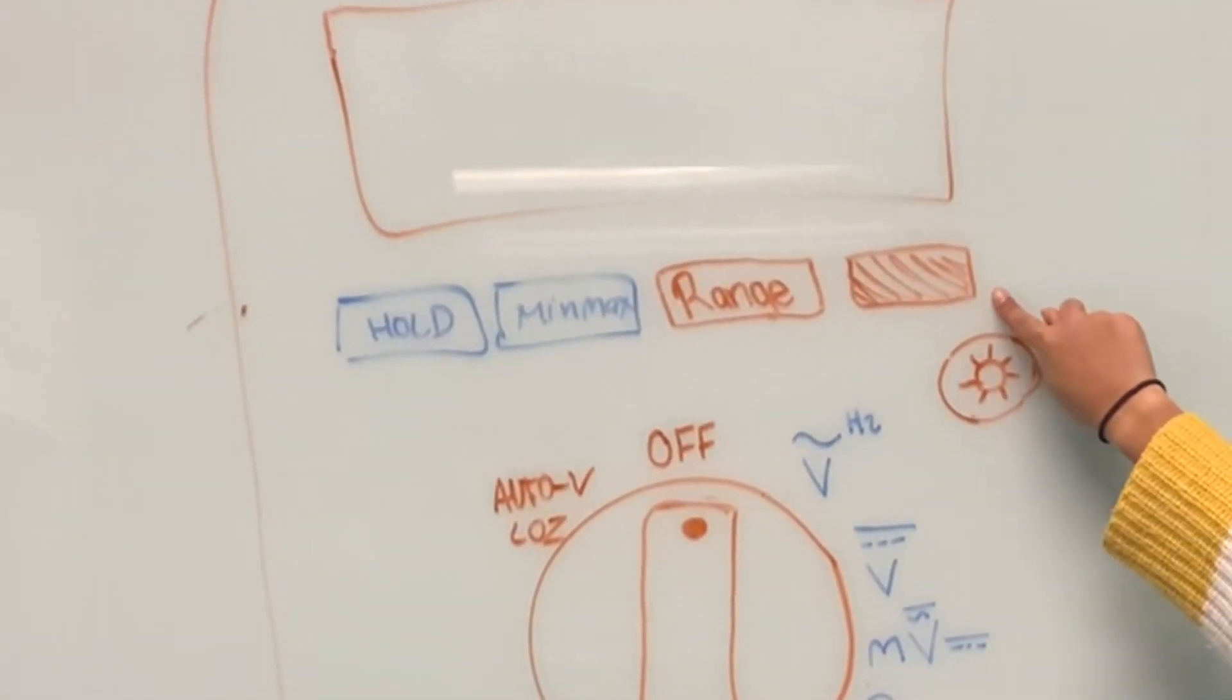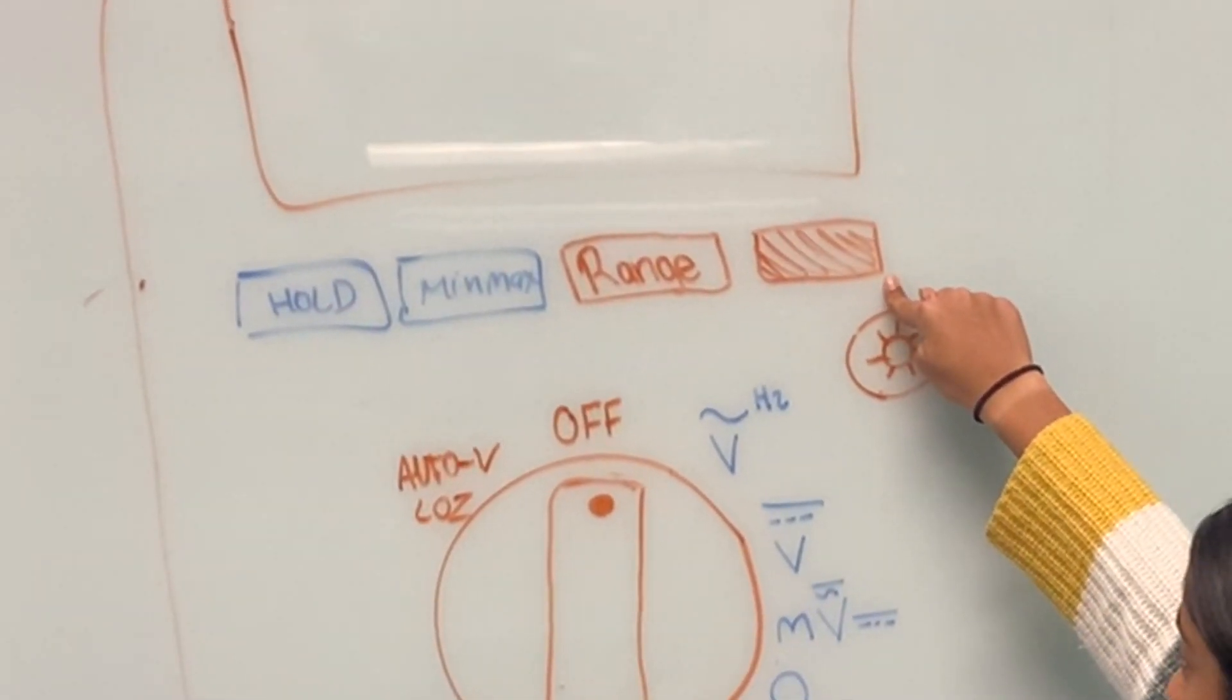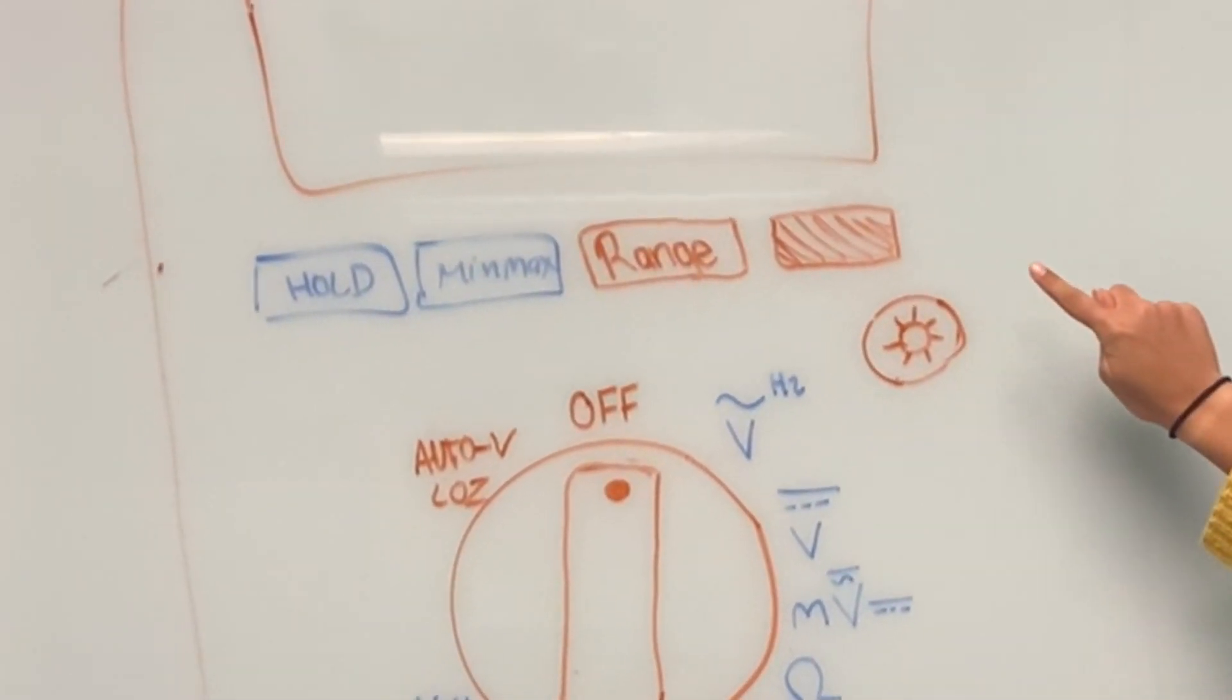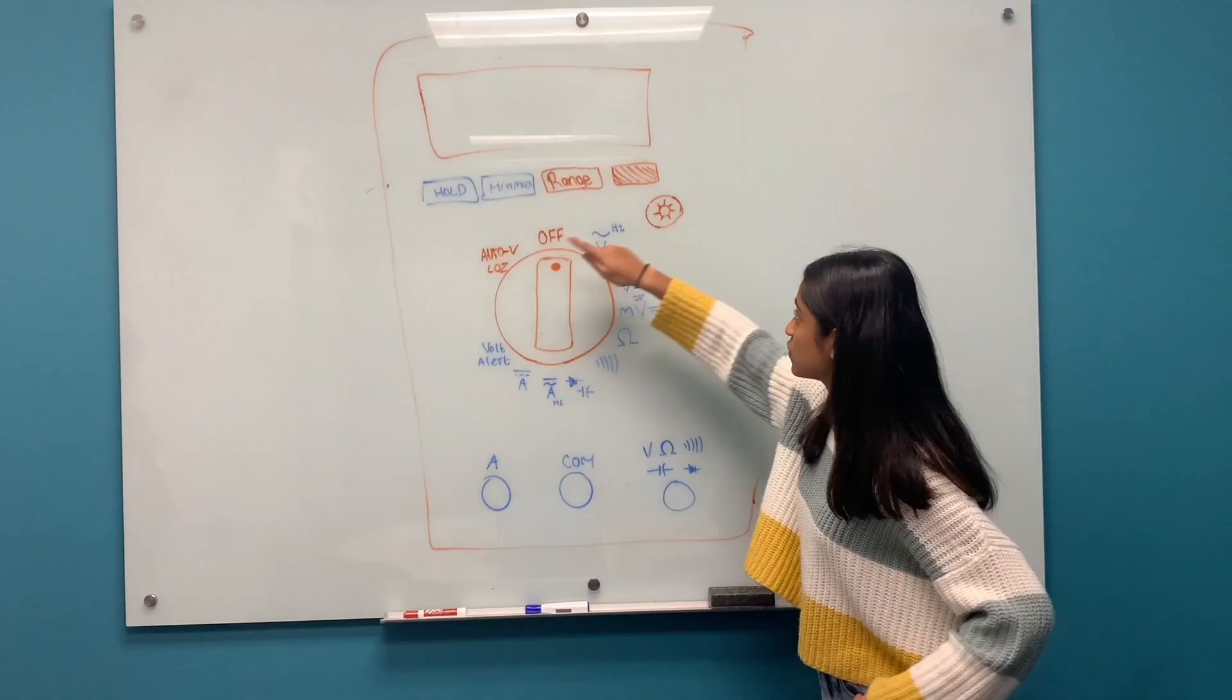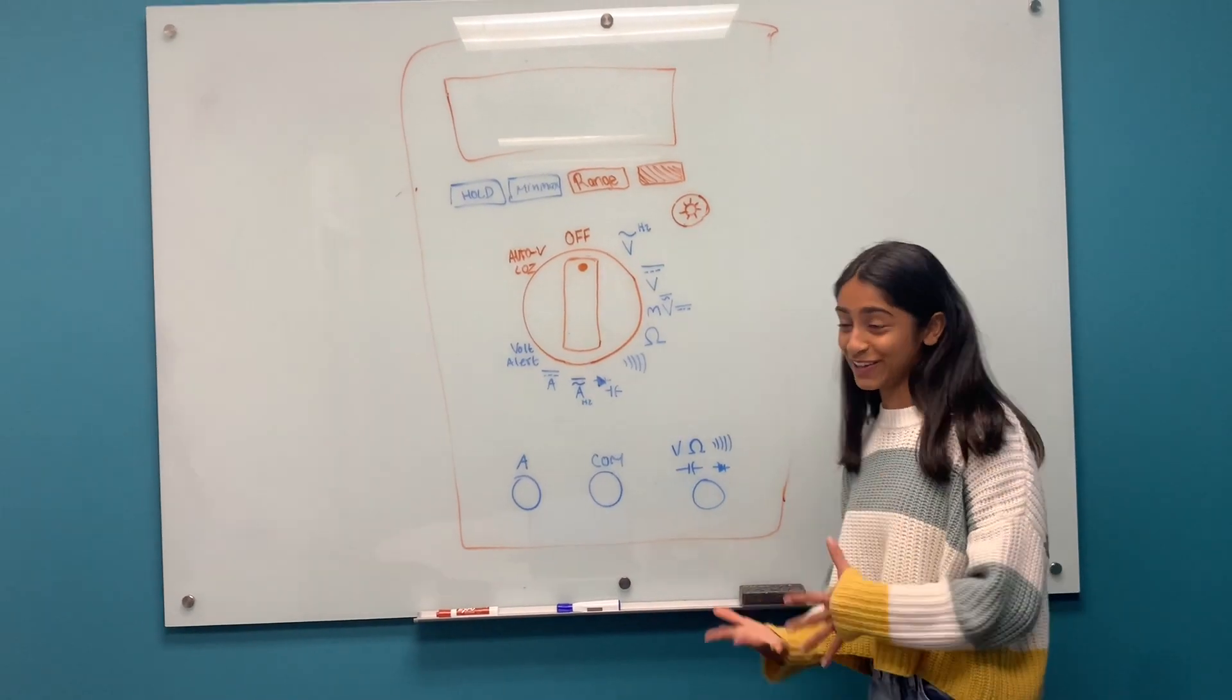Then there's this big yellow button, and this basically just functions as the secondary function of these buttons. So it's kind of like the shift button under a calculator.